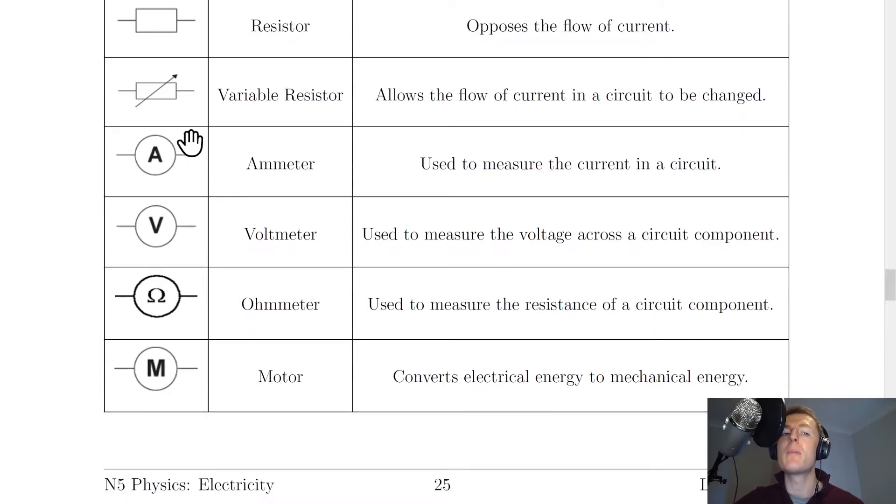Next we have the ammeter. Remember the ammeter is a big circle with a capital A in it. And this is used to measure the current in a circuit. A voltmeter is a big circle with a capital V in it, which is used to measure the voltage across a circuit component. And the ohmmeter again is a big circle with the omega symbol, which is the unit of resistance. And this is used to measure the resistance of a circuit component.